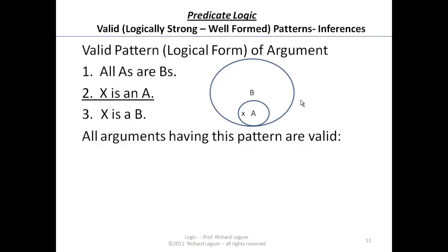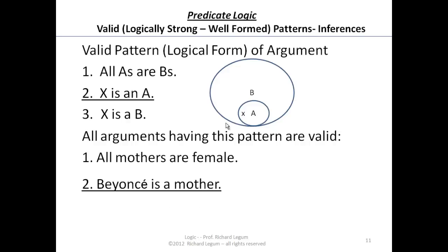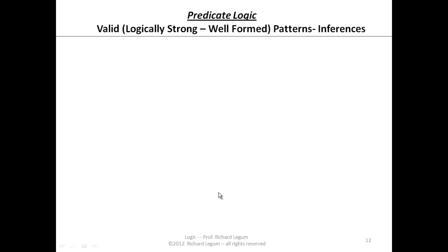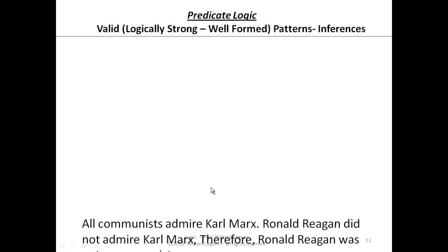All arguments having this logical pattern are valid. For example, if we use mothers for A and female for B, we get: all mothers are female. For X, we use Beyoncé the singer, and we know Beyoncé is a mother. Therefore, Beyoncé is a female. This shows our argument has worked and is a good argument.